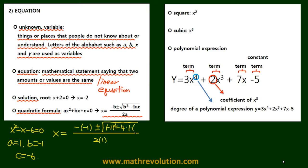so 4 times 1 times negative 6, then we get 1 plus or minus the square root of 25 over 2.